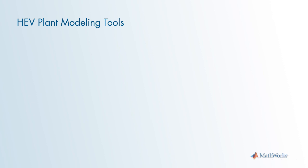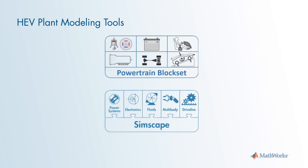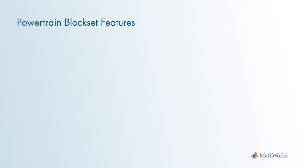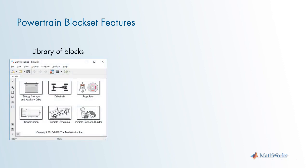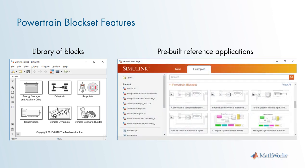Let's now discuss plant modeling tools. MathWorks provides two products for modeling hybrid electric vehicle systems: the Powertrain Blockset and Simscape. Both are designed to be part of the Simulink environment. Some key features of the Powertrain Blockset include a library of building blocks covering energy storage, drivetrain, propulsion, transmission, vehicle dynamics, and vehicle scenarios. It also contains several pre-built reference applications including a conventional powertrain, an electric vehicle, several types of HEVs, and engine dynamometers.